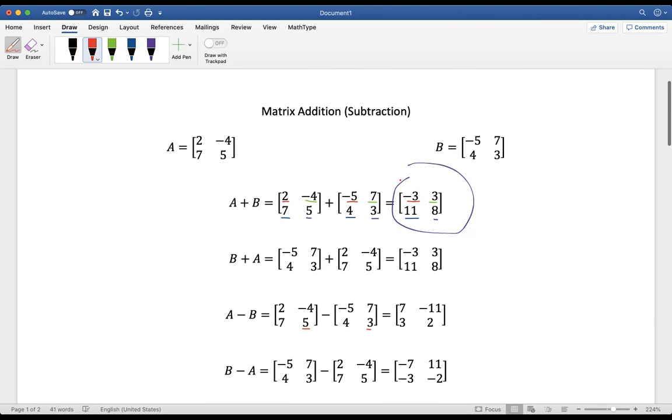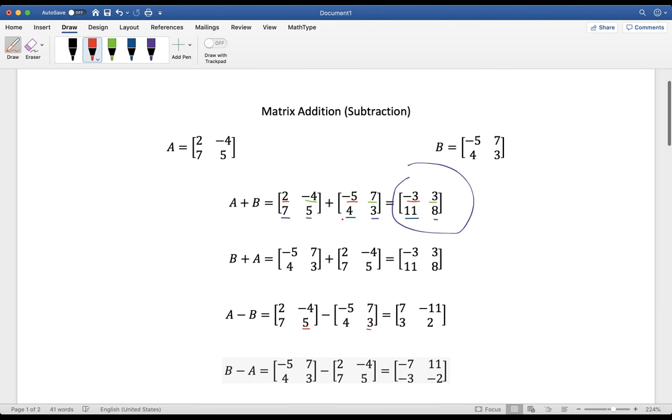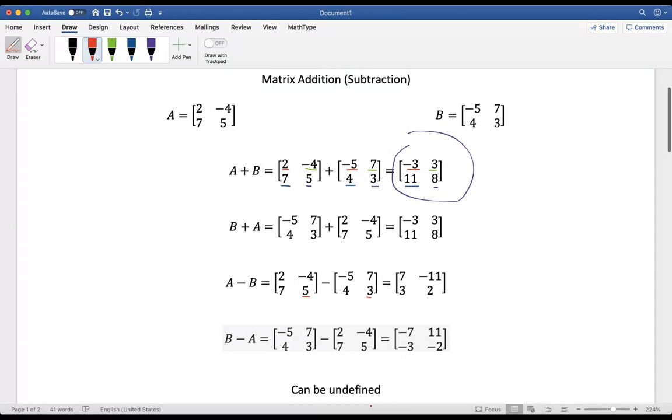Because addition and subtraction are basically the same thing, you just got to watch your signs. If we flip the order of A and B, though, we do get a different answer. We get actually the opposite: negative seven, positive 11, negative three, negative two. It changes the signs on all the terms if you change the order.